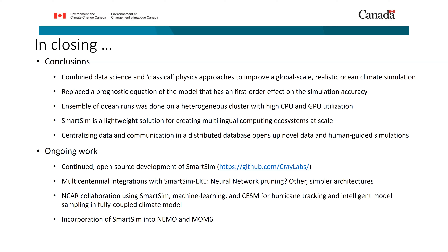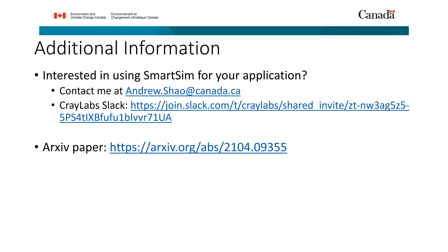We're doing climate-scale length integrations with SmartSim right now and thinking about incorporating machine learning into the NCAR earth system model for high-resolution hurricane tracking and intelligent model sampling — selectively sampling only where hurricanes actually are rather than outputting full global 3D fields. We're also incorporating SmartSim into MOM6 and a variety of other computational models. For more information, contact me at andrew.show@canada.ca, join the SmartSim Slack channel, or check out the paper on arXiv describing the technical setup and ensemble ocean run metrics.